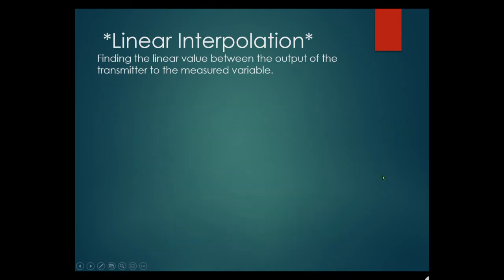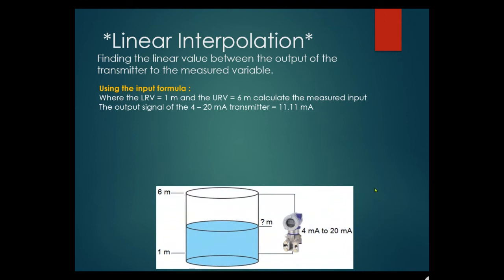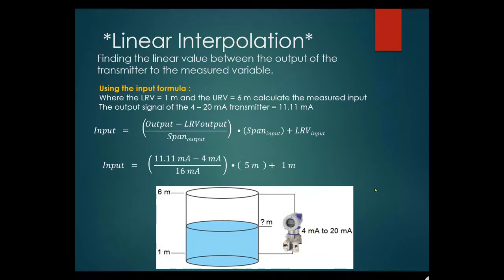For the input formula example: lower range value is 1 meter, upper range value is 6 meters, but this time the output is 11.11 milliamps — what is the input? Using the input formula: 11.11 milliamps minus 4 milliamps LRV, divided by the span of 16, times 5 meters, plus 1 meter. We get 3.22 meters.